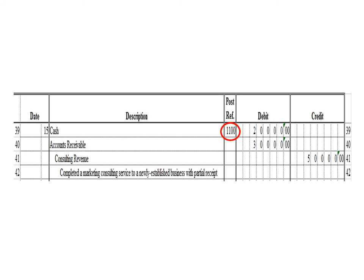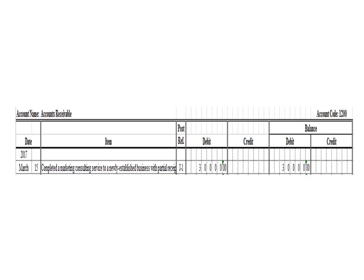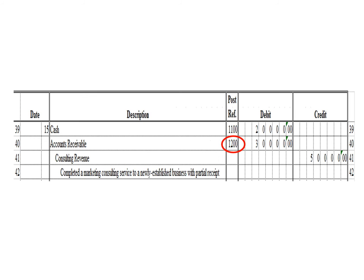Let us post the second debit entry — a debit to accounts receivable for 30,000 pesos. In the accounts receivable ledger, we write date March 15, description: completed a marketing consulting service to a newly established business with partial receipt, posting reference J1. Under the debit column, write 30,000 pesos, and in the balance section under debit, write 30,000 pesos. After posting, write the posting reference 1200, the account code for accounts receivable.